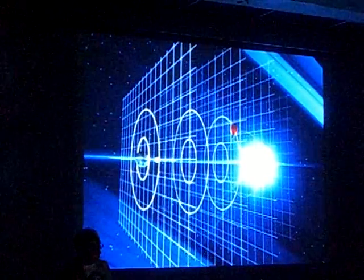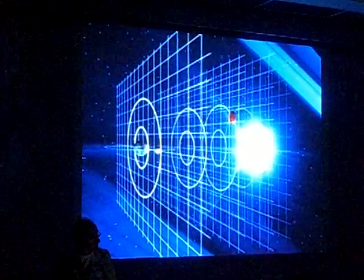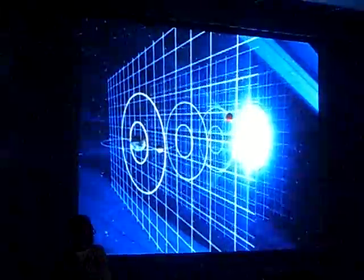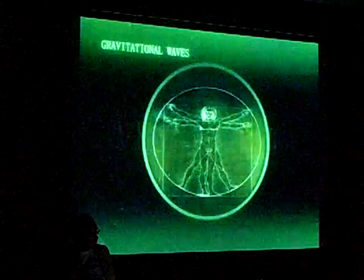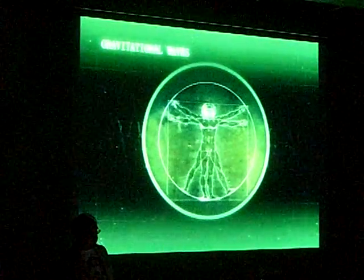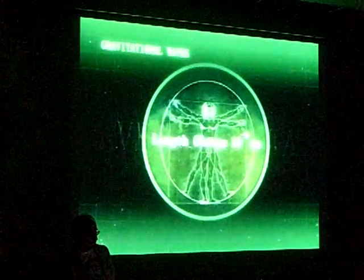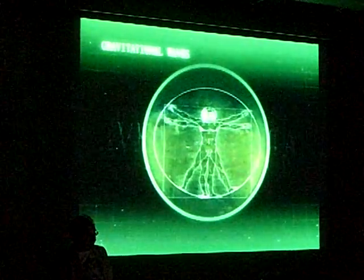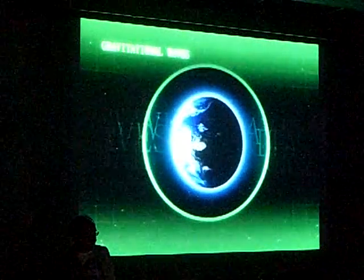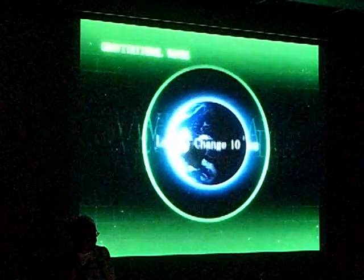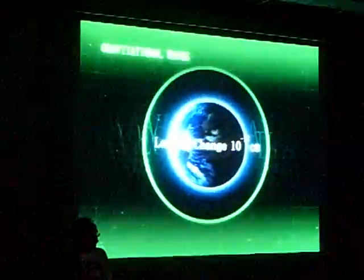But it took another century before Einstein could make a full theory of gravity that had the waves. And this film shows what they are like. Gravitational waves stretch and squeeze space as they fly through the universe. They change the distances between points in space.